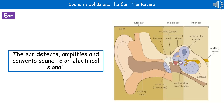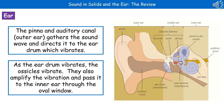If we then consider the human ear, what we have is a whole organ that's designed to detect, amplify, and convert sound to an electrical signal. I've given you a diagram on the right that shows all of the key features of the ear itself. The first thing that happens is the outer ear, which is made up of the pinna and the auditory canal, gathers the sound wave and directs it to the eardrum.